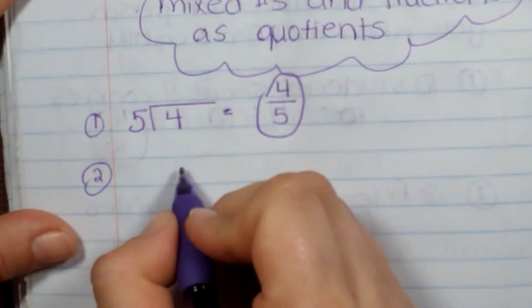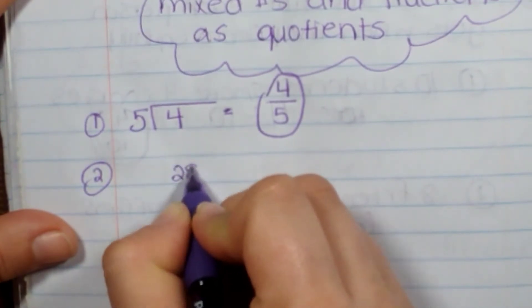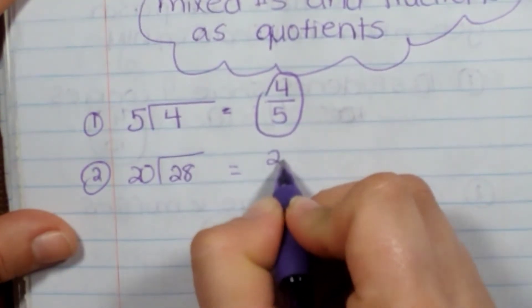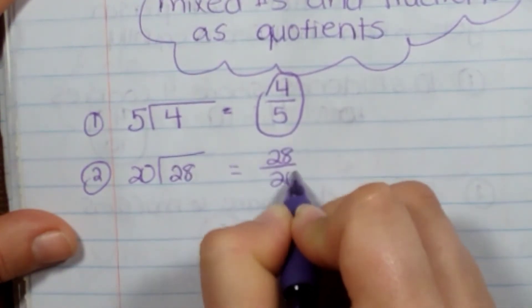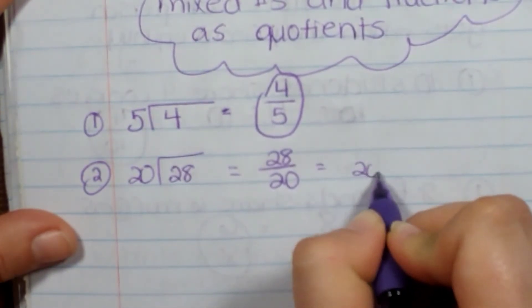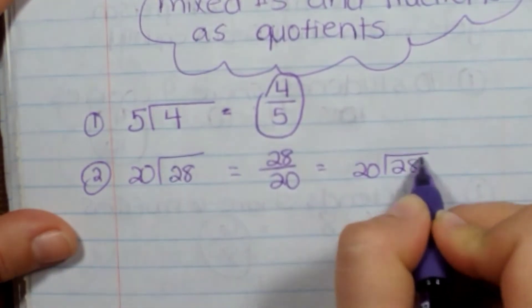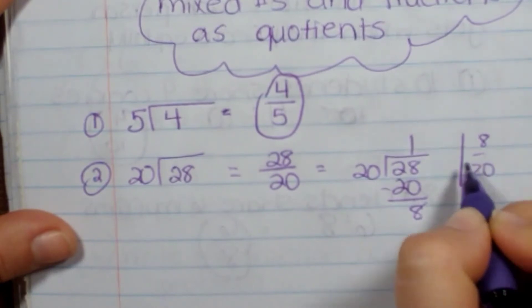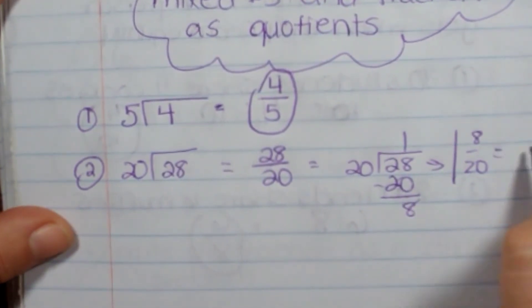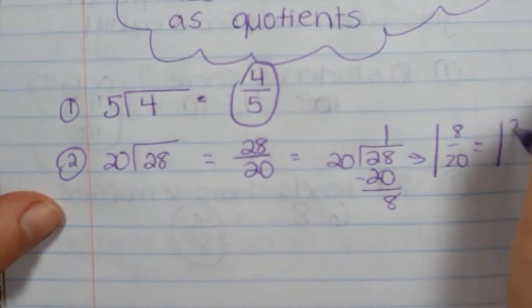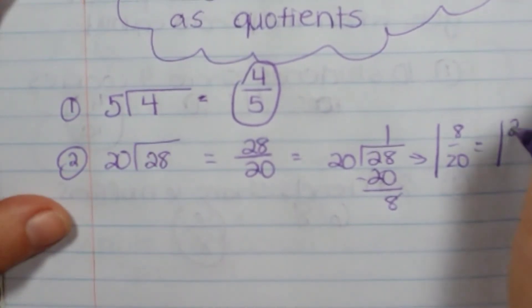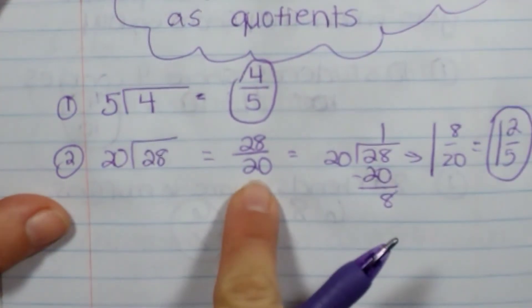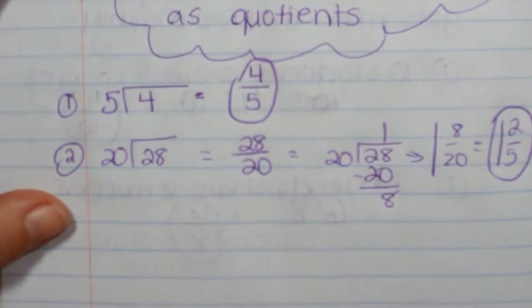Let me do another one. Let's do 28 divided by 20. So this would be 28/20. Well, this is a mixed number, so I have to find out how many times it goes in. That would be 1 and 8/20. Well, I can simplify this. This would be 1 and 2/5 because 4 could go into them. So that would be my answer. I take that and turn it into a mixed number and simplify.